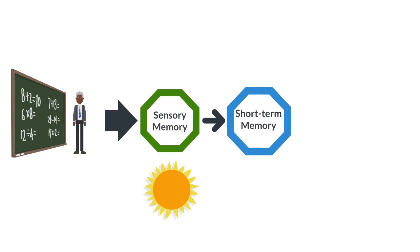Many things pass through your sensory memory and then disappear, but some things go into short-term memory. Short-term memory allows you to hold a few pieces of information at the same time for a few seconds. For example, try to memorize this four-digit number. Can you still remember it? That's your short-term memory in action. That number isn't very important, though, and it's unlikely you'll remember it next week or even later today because it's not in your long-term memory.